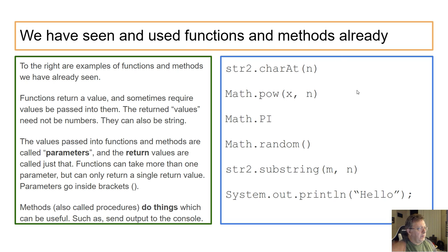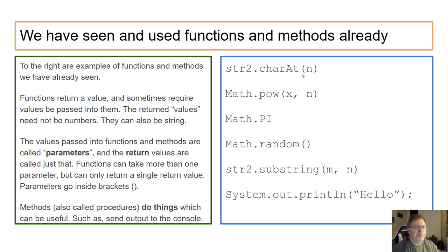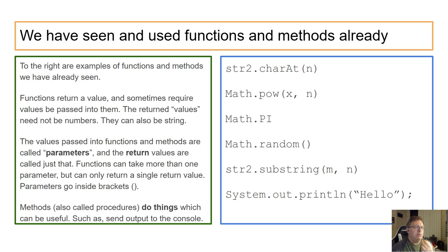We've seen and used functions and methods already. For example, if we have a string called str2, we can access a particular character inside it by passing a parameter n into the method charAt. If you have the word 'word' — W, O, R, D — and you pass the number two, counting from zero gives you index 2, which is 'r'. So this function returns the letter r.